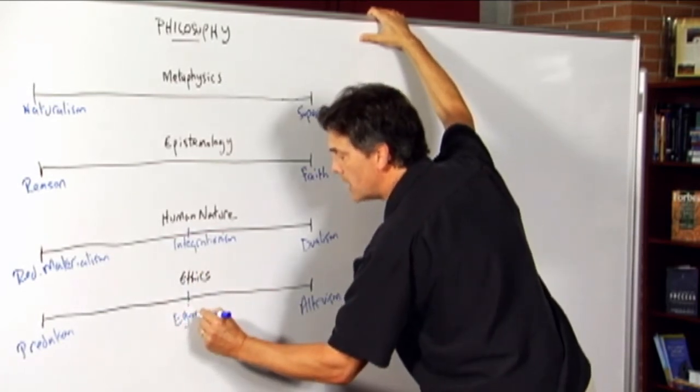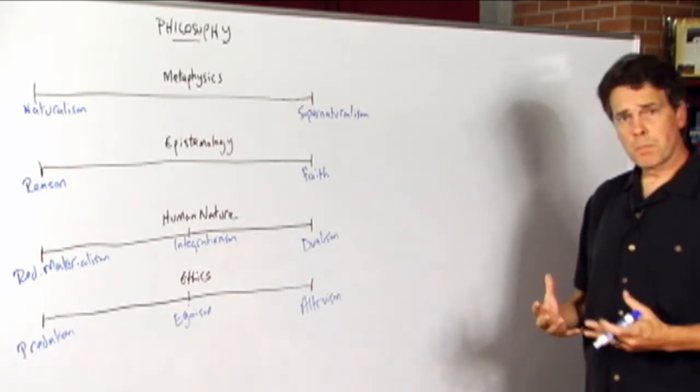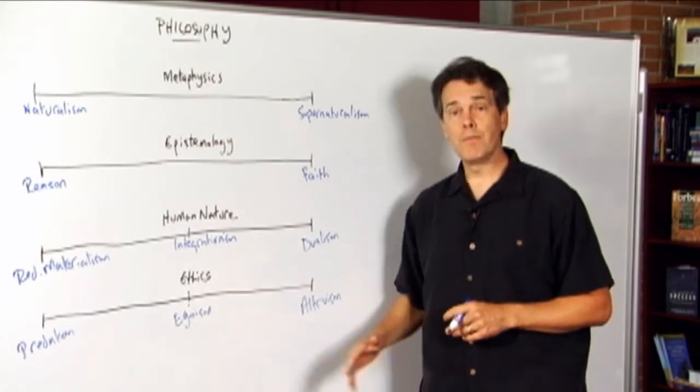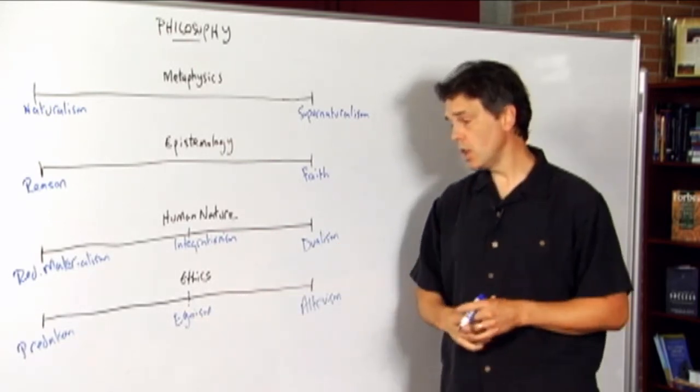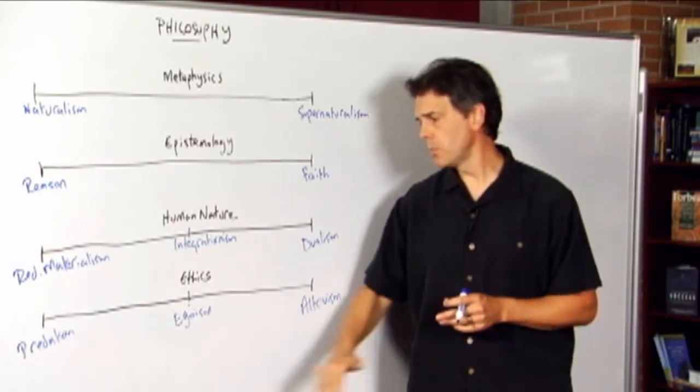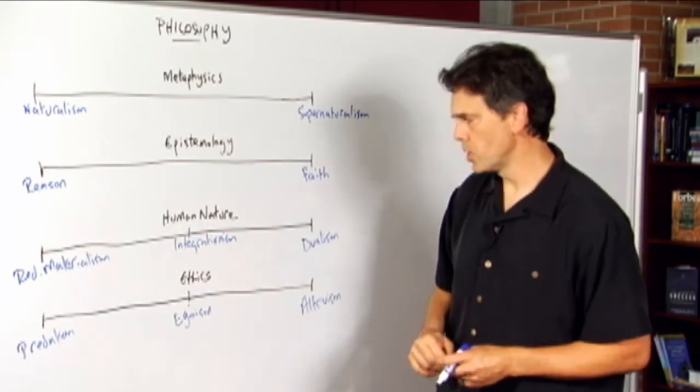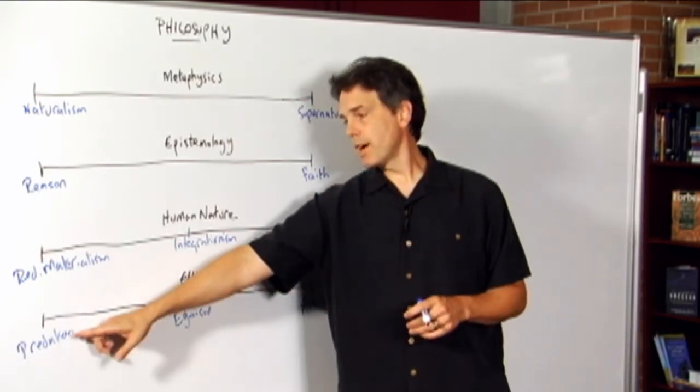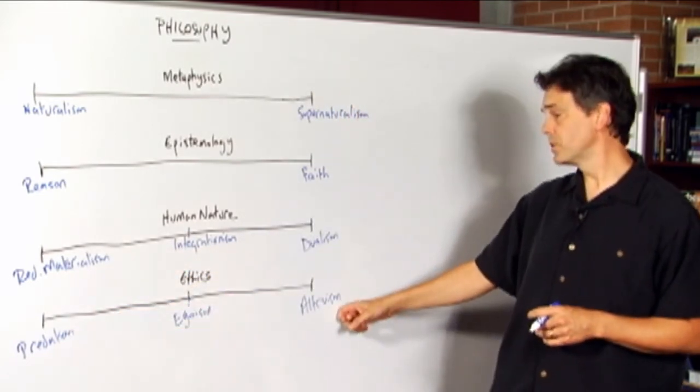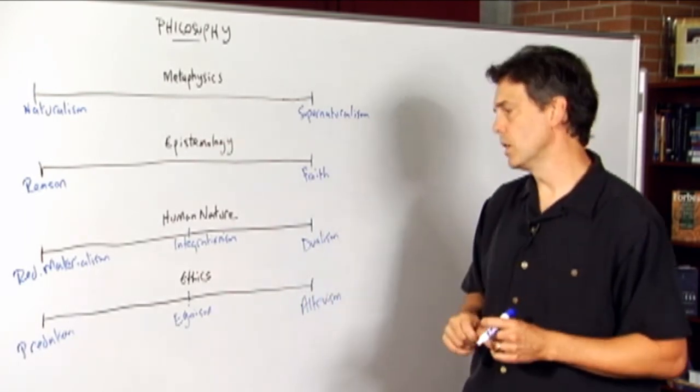This is the position that we called egoism, and egoists argue that human beings should pursue their happiness, should pursue their own lives, their lives as their standard of value and goodness to be achieved, but that human beings should recognize other people's equal legitimate interest in doing so. And to the extent that we have social interactions with each other, it shouldn't be a matter of sacrificing other people to oneself or sacrificing oneself to other people, but rather working out mutual trade or mutually beneficial relationships.